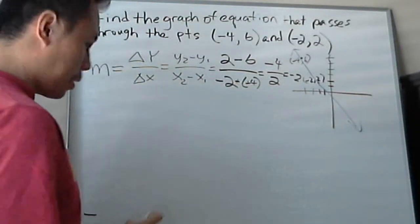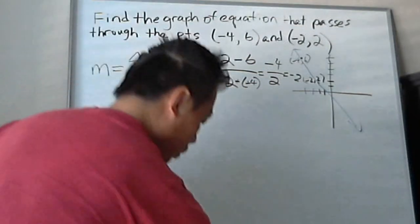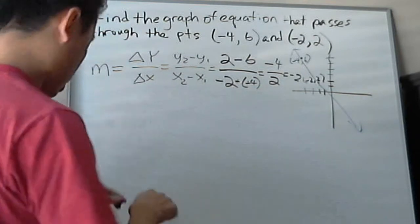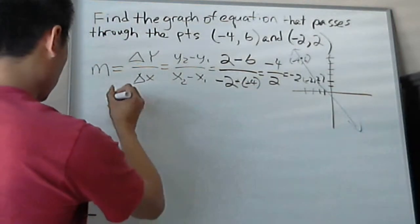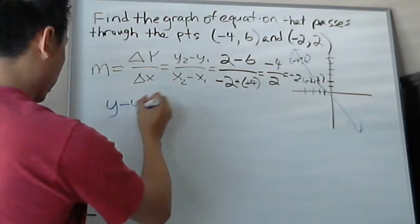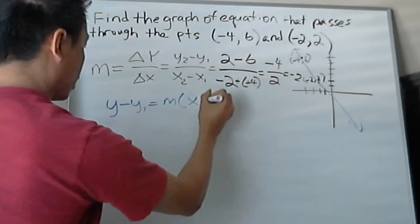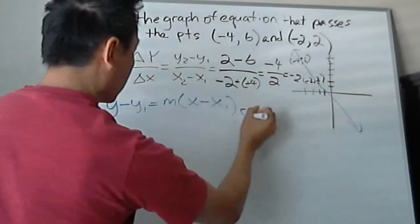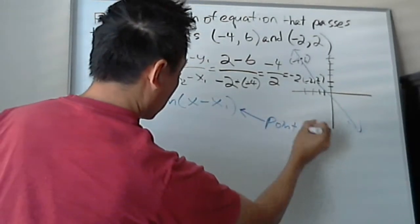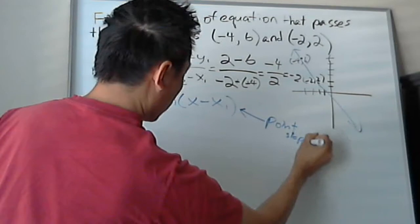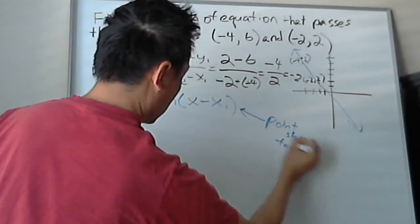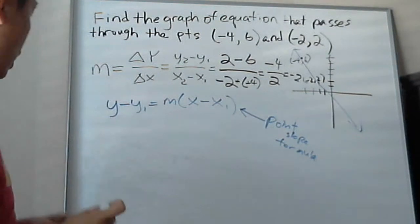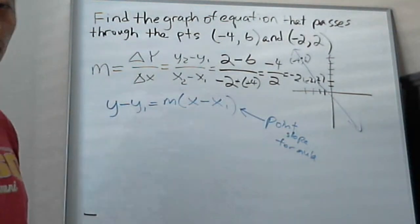So what I do is now I'm going to put it into the point slope formula, and this is a very important formula to remember, which is basically y minus y1 equals m times x minus x1. They call it the point slope formula.